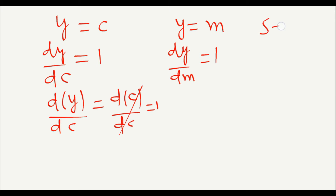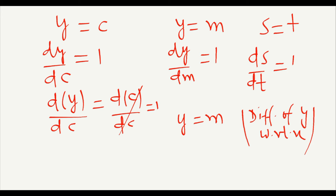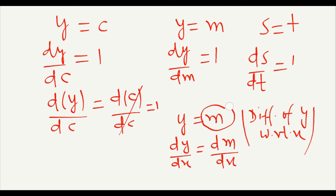If s equals t, then differentiation of s with respect to t is one. Now observe: if y equals m and someone asks for the differentiation of y with respect to x, then on the right side we would need differentiation of m with respect to x, which is not possible. So we need to understand that differentiation is always carried between the relevant variables.